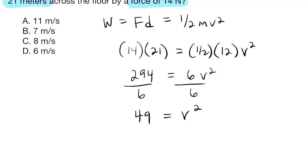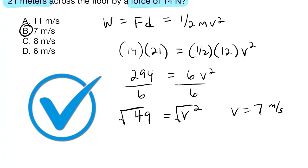That's going to equal v squared. And so all I have to do now is square root. I know that the square root of 49 is 7. So the correct answer here is going to be 7 meters per second.